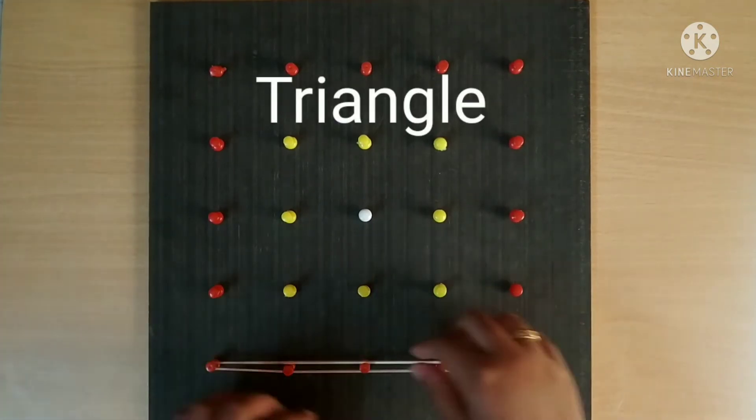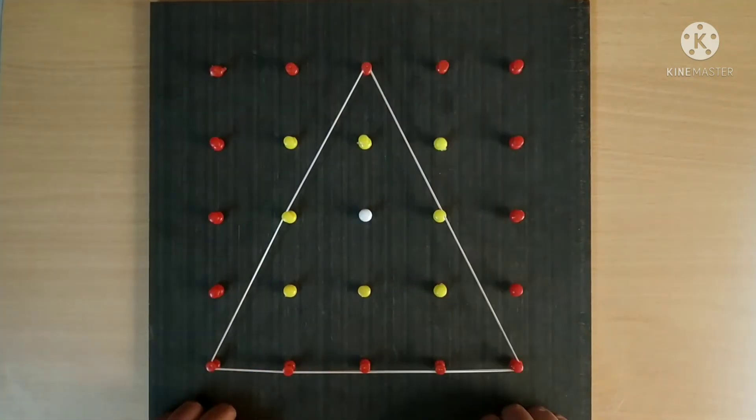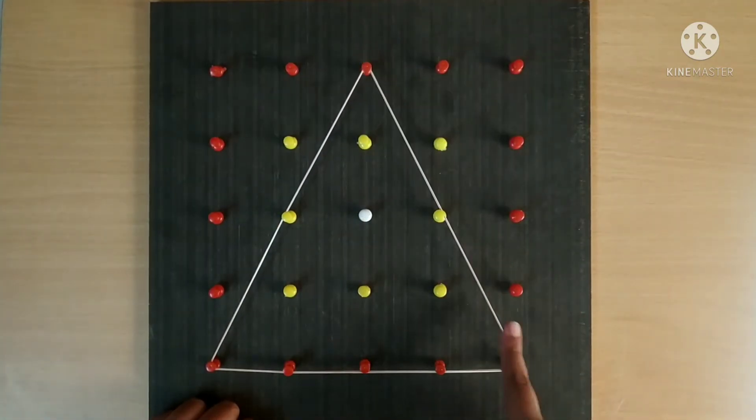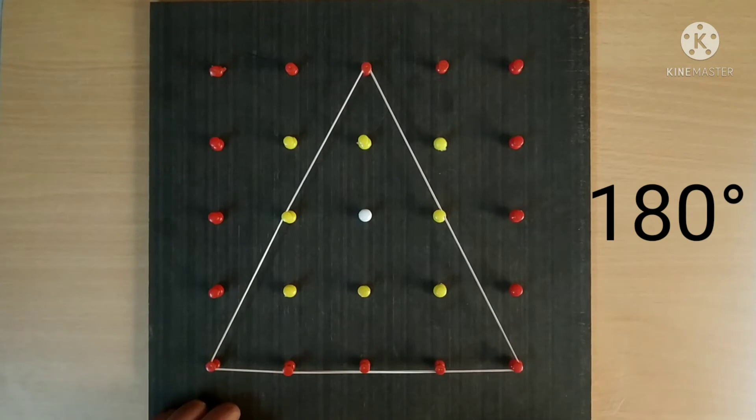Triangle. A triangle has 3 sides, 3 vertices, 3 angles. In a triangle, the sum of all its interior angles is equal to 180 degrees.